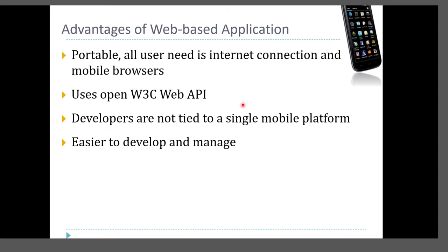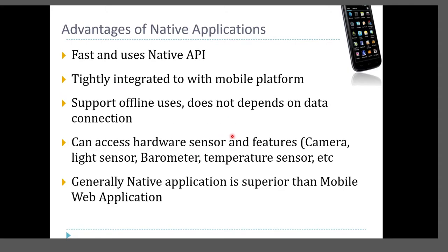Additionally, mobile web applications are easier to develop and manage because you only have a single source code, compared to native applications where you might have multiple source codes. However, native applications have direct access to the native API layer, making them faster than mobile web applications. They are also tightly integrated with the mobile platform user interface and API, so the user will find animations more seamless, graphics clearer, and transitions smoother.